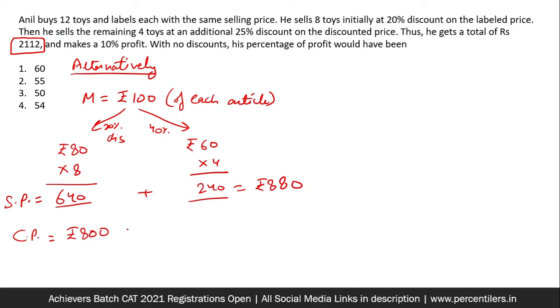Clearly, 800 to 880 is 10% profit. So 800 becomes the CP. So if 800 is the CP of each, CP of 12 articles, I can find the CP of each article to be 800 by 12 and there you go, it is 200 by 3.